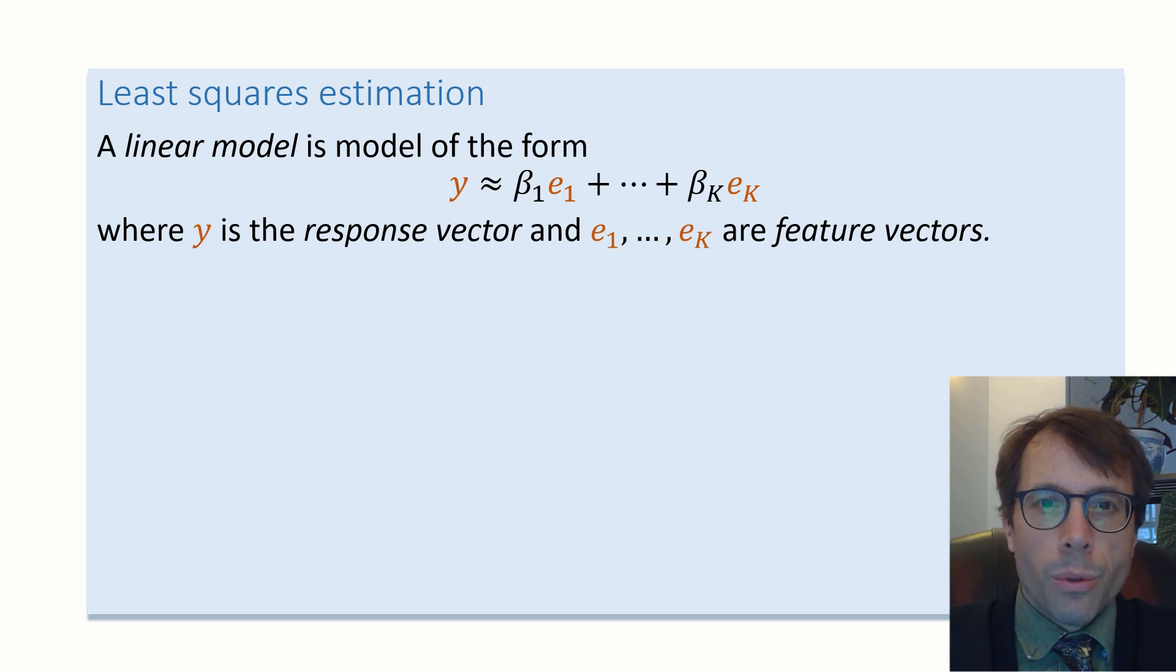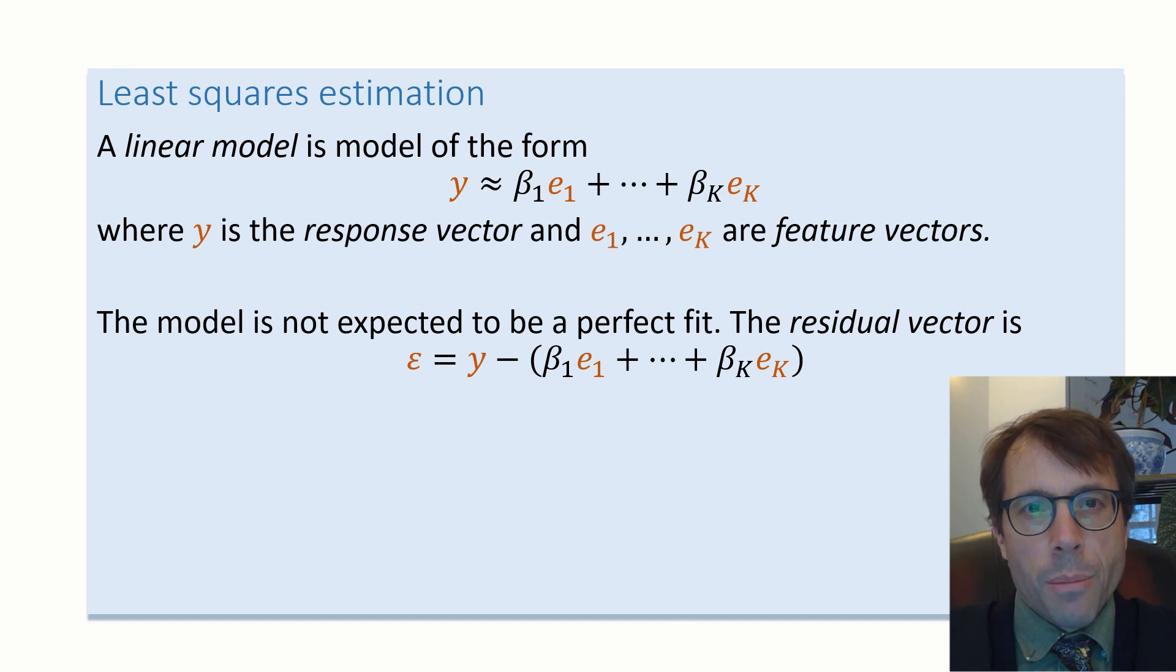There's an approximate equals in there. What I mean by this is that we expect the y data to be noisy, so we don't expect a perfect fit. Let's define epsilon to be the difference between the observed y and what we predict it to be epsilon equals y minus the sum of the beta j times e j. This epsilon is called the residual vector.